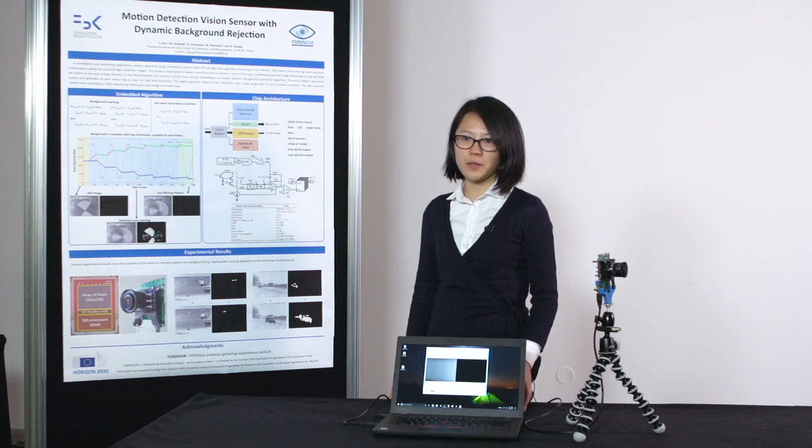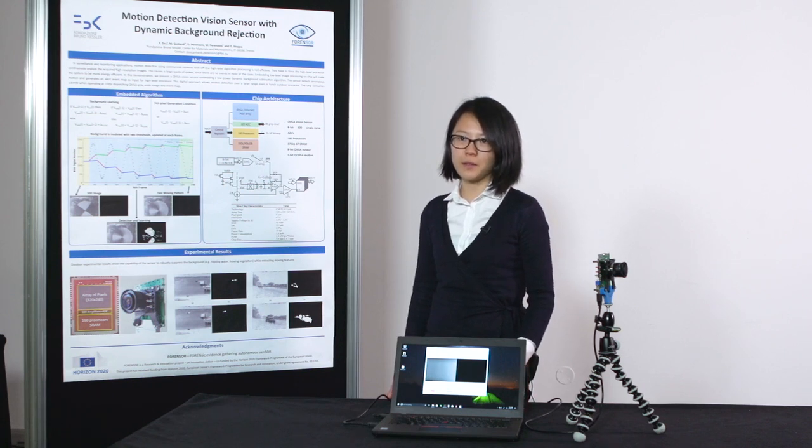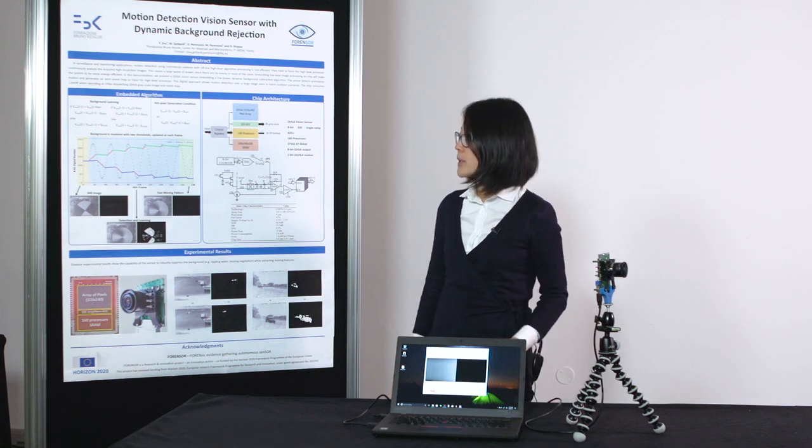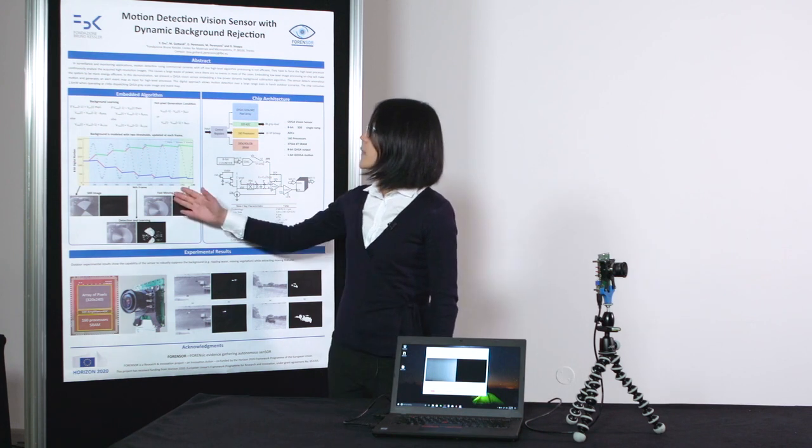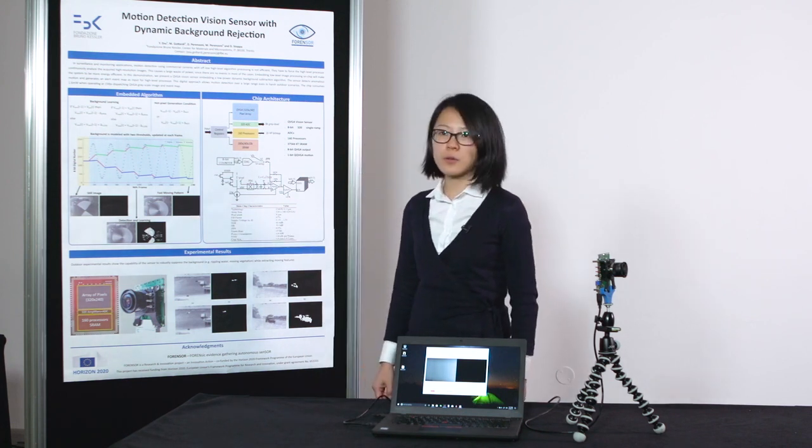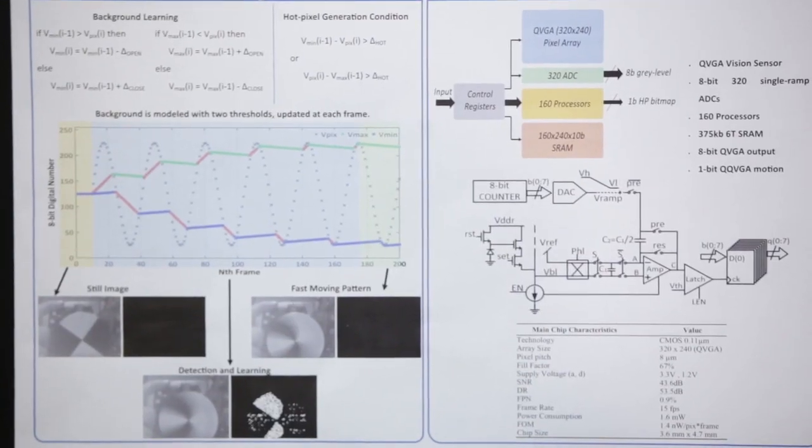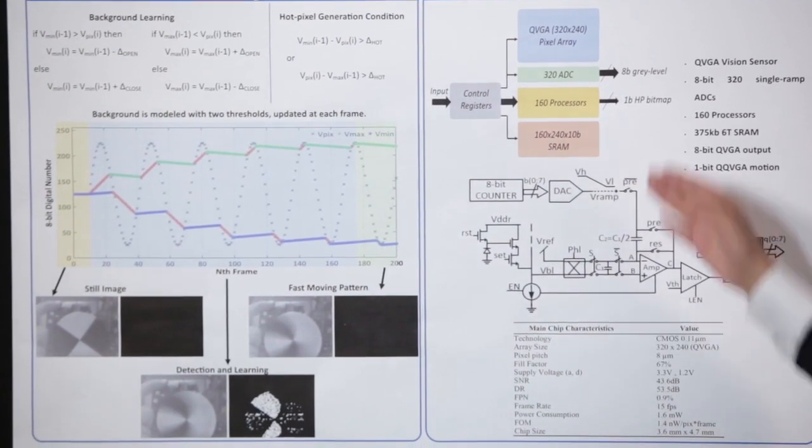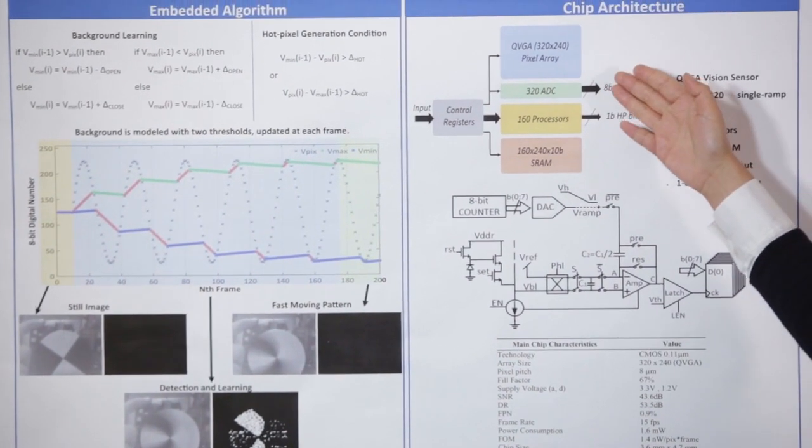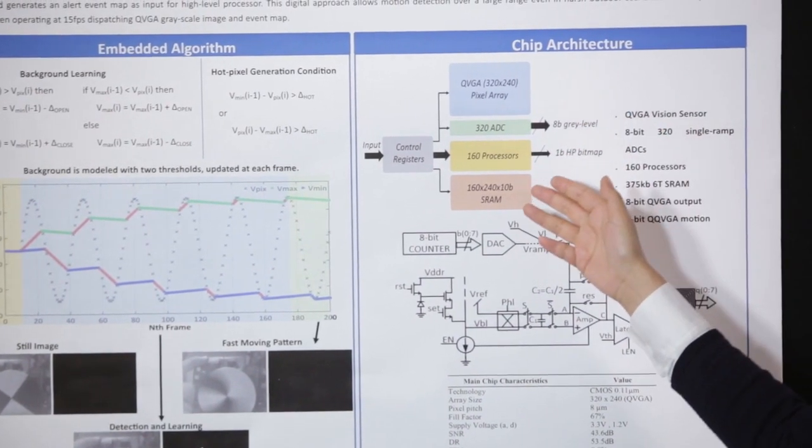So to build battery-based vision sensors, we need to embed the image processing on chip. So here what we do, we just added a dynamic background rejection algorithm on our chip. So basically, this is a QVGA 3D pixels with column-level processors.